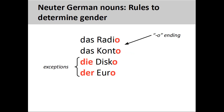Many nouns ending in '-o,' such as 'Radio' (radio) and 'Conto' (bank account), will be neuter, although it is important to note that there are numerous exceptions. 'Disco' (discotheque) and 'Euro' (the euro currency) are examples of exceptions.